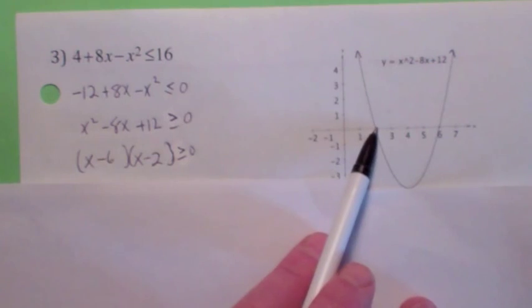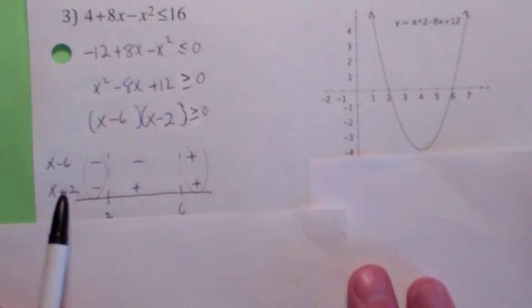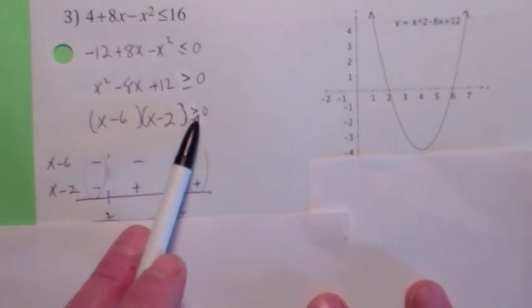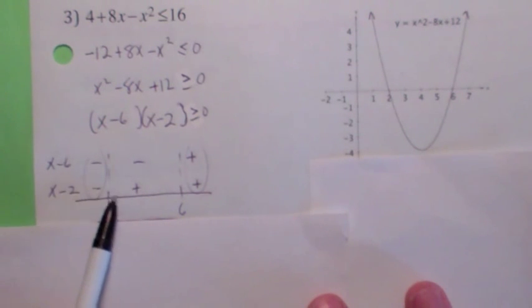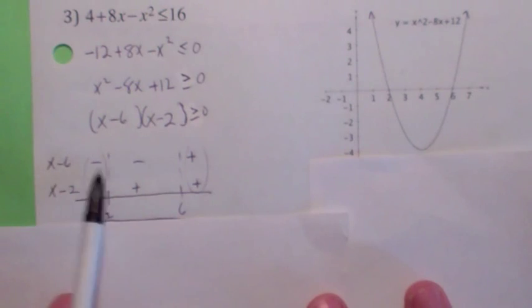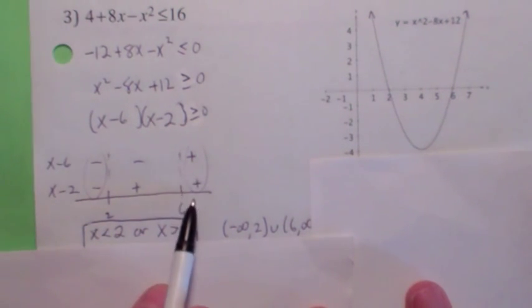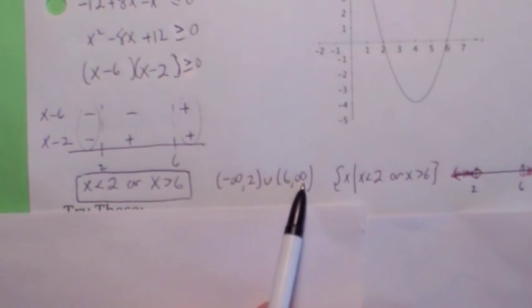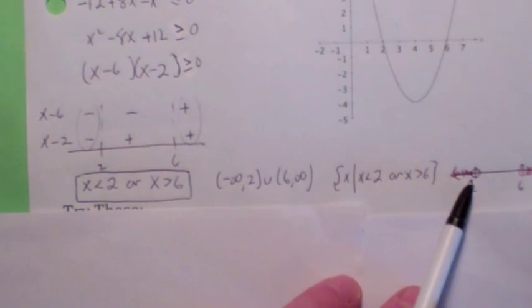Once we factor it, we make a sign chart. Find where the factors are zero — at 6 and 2 — then pick test points. The product is greater than or equal to zero when both factors are negative or both positive. Pick zero to the left of 2: both negative. Pick 4 in the middle: one positive, one negative. Pick 100 to the right of 6: both positive. So the solution is x less than 2 or x greater than 6. In interval notation: negative infinity to 2, union 6 to infinity.